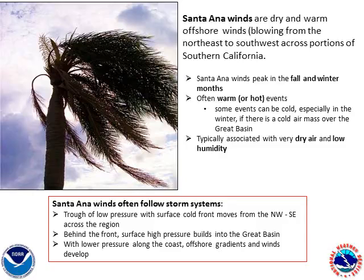Finally, these events very often follow storm systems that cross the region, in particular if the storms move from northwest to southeast over the area. As the storm moves inland, high pressure will follow and build into the Great Basin. For example, we often see strong surface highs over Utah and Nevada during these events. And with lower pressure along the southern California coast, offshore gradients develop and northeasterly winds result.